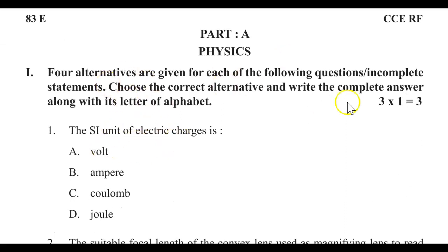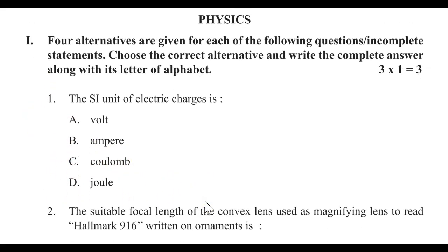This is choose the correct answer. Three questions are there. Each question carries one mark, totally three marks. So the SI unit of Electric Charge is Volt, Ampere, Coulomb, Joule. You need to select which is the question and which is the option. Suppose Coulomb is the answer, then you have to write question number one, option C, Coulomb. This all complete information you are supposed to write.